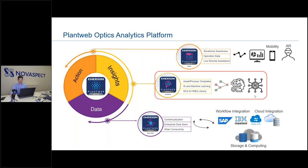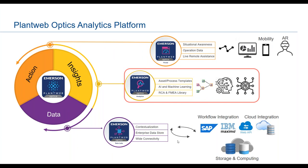Today's session is focused on the analytics component, which is one of the pieces of the Plant Web Optics Analytics platform. The platform is composed of three main components: the data lake integrating many sources of information, the portal enabling cross-collaboration from field personnel to corporate offices, and the analytics — sitting in the middle — which grabs information from the data lake and distributes it to the portal, mobile devices, and smartphones.